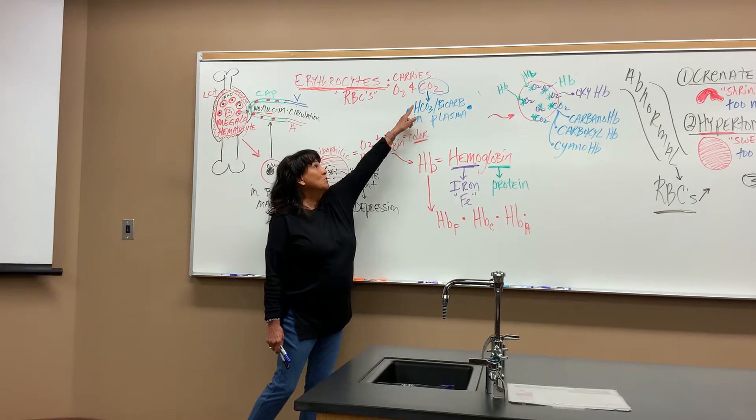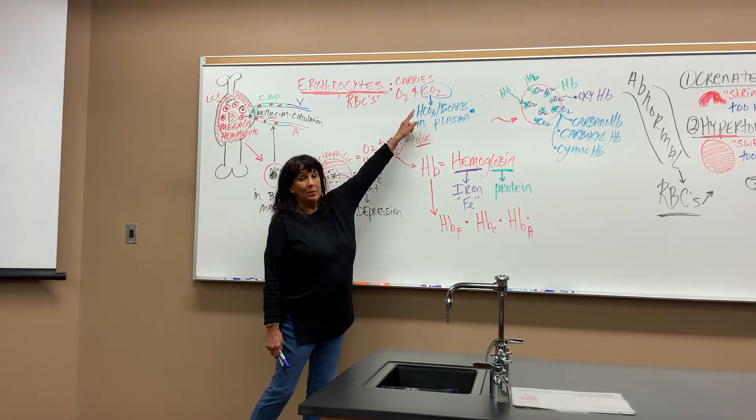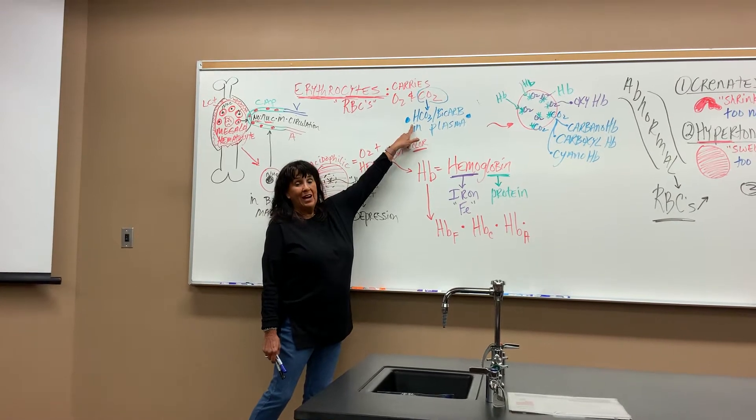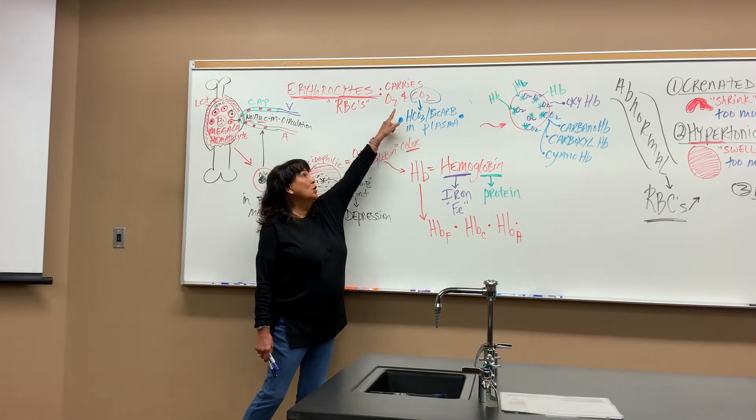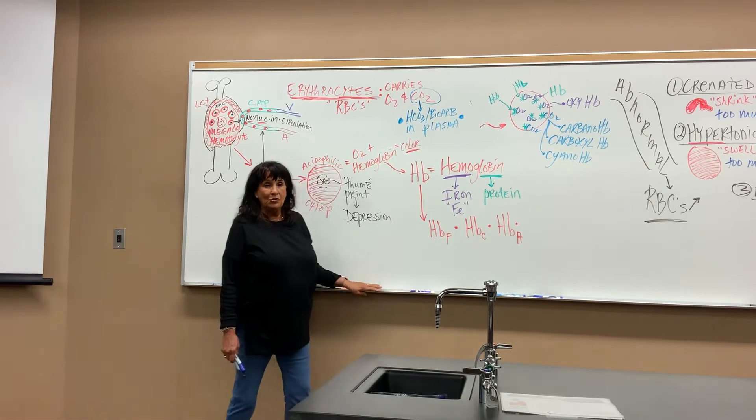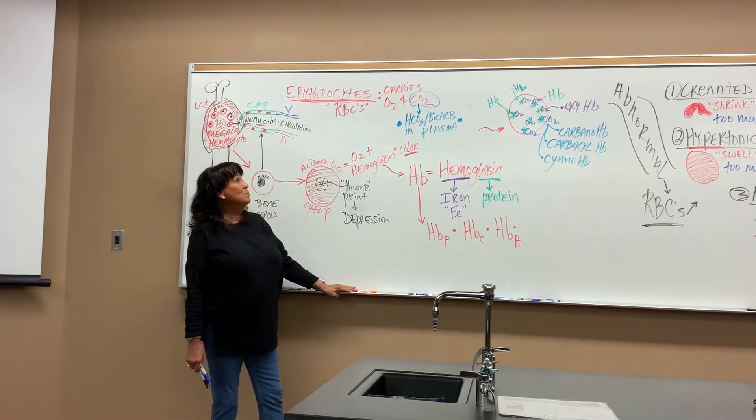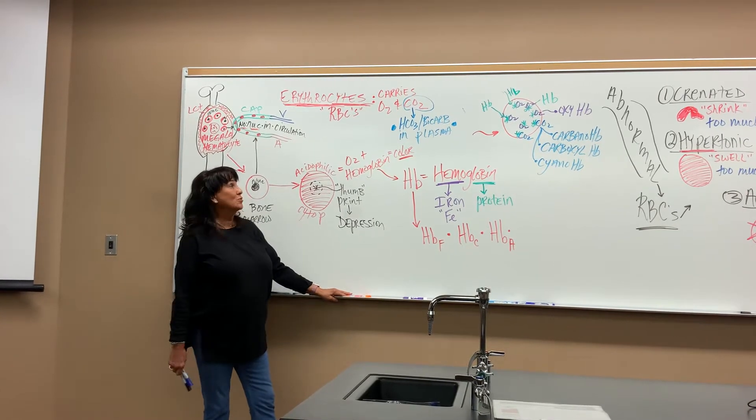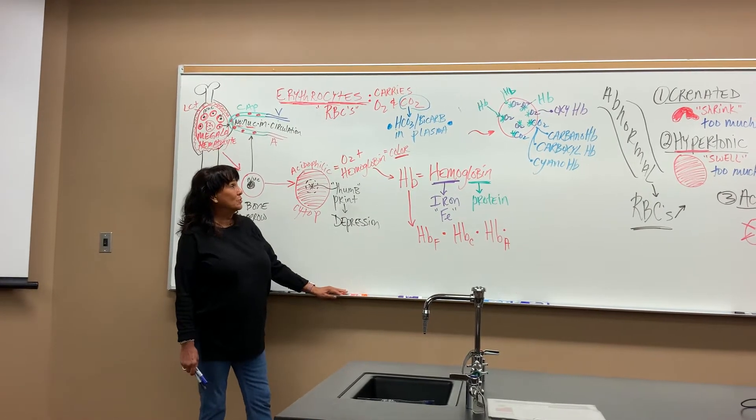But to carry CO2 on their cell membranes, to get rid of it, you have to have a bicarbonate dissolved in your plasma so that you can load the CO2 onto the blood cell. We'll be talking about that when we get to the respiratory system, when we do the exchange of oxygen and CO2.